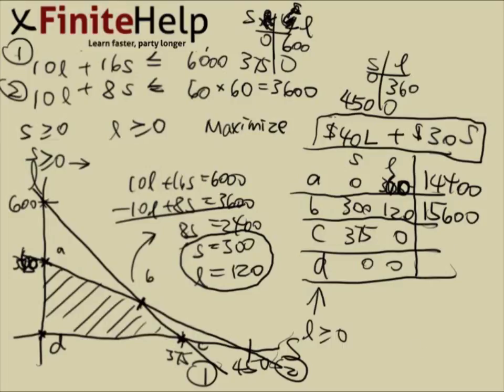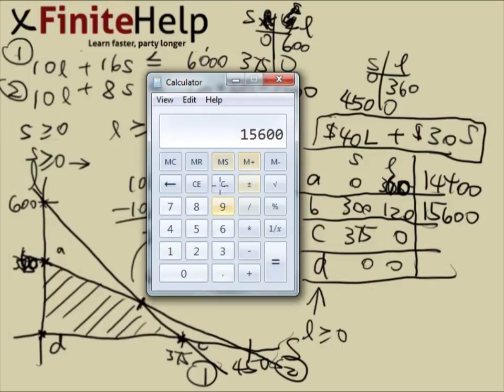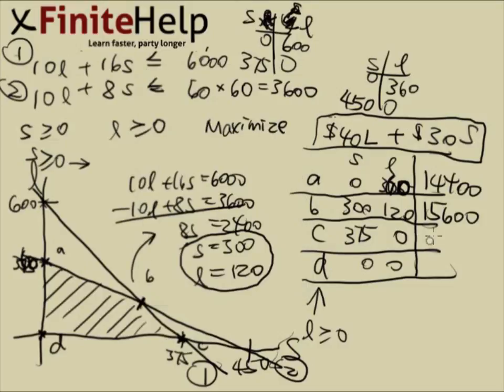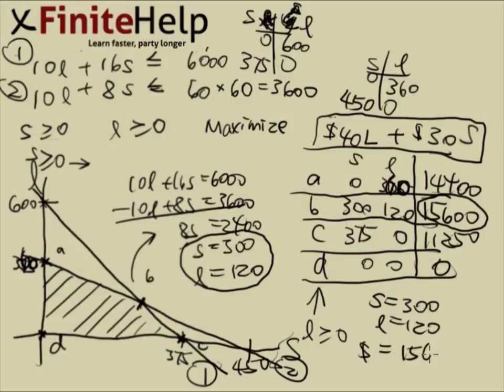Now for point C, we have 375 times 30, which is 11250. And then 400 is going to be 0. So here this point is the highest. So to answer your question, the optimum amount to make is 300 of the standard version and 120 of the luxurious version. And your profit is going to end up to be $15,600.